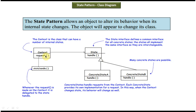Many concrete states are possible which implement the State interface. On the left side you can see the Context class, which can have a number of internal states. Whenever a request comes to the context object, it delegates the request to the concrete state objects. Each concrete state receives and handles the request with its own implementation — so the implementation of ConcreteStateA will be different from ConcreteStateB. In this way, when the context changes its state, its behavior changes as well.